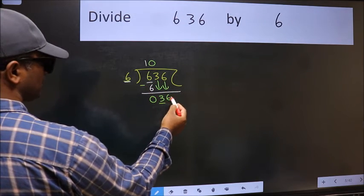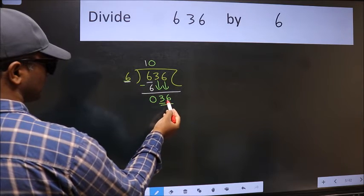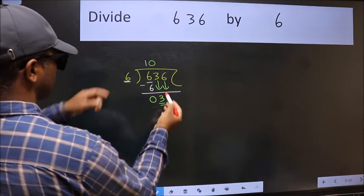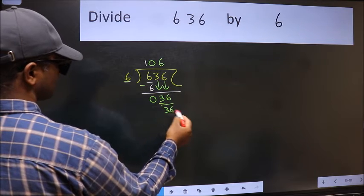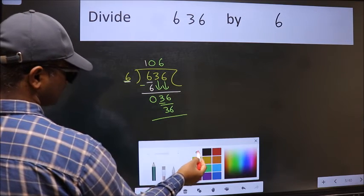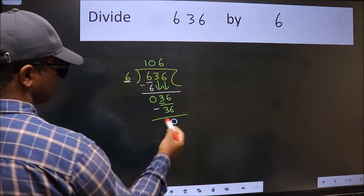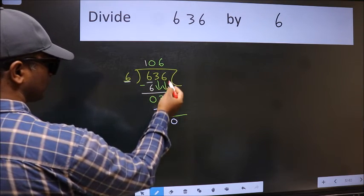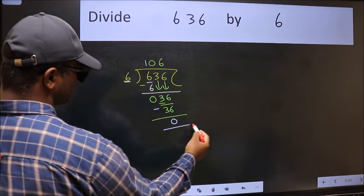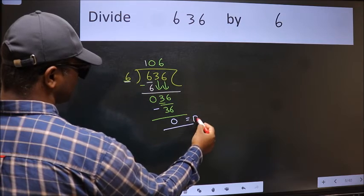Now 36. When do we get 36 in the 6 table? Six sixes are thirty-six. Now we should subtract. We get zero. No more numbers to bring it down, so we stop here. This is our remainder, and this is our quotient.